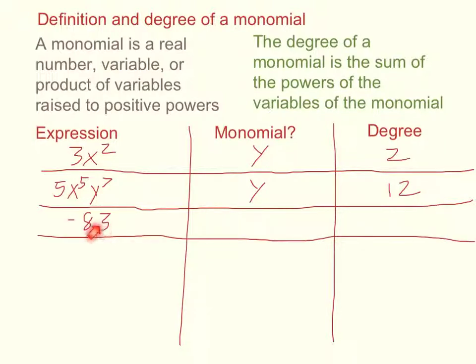Note that negative 83 is going to be a monomial as well. A monomial can be simply a real number. But because it doesn't have any variables, its degree is going to be 0. The degree is the sum of the powers of the variables. No variables, there's going to be no power to them, so it's going to be degree 0.